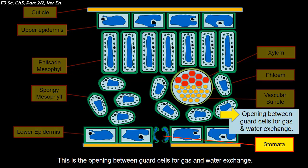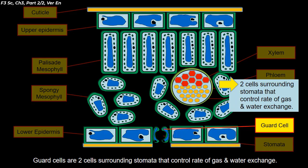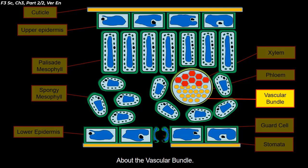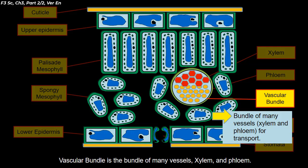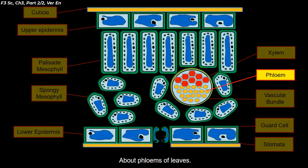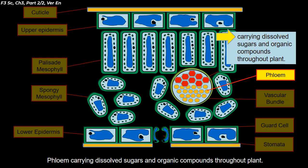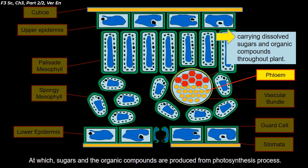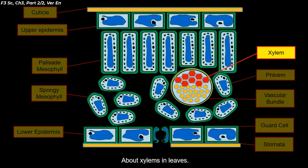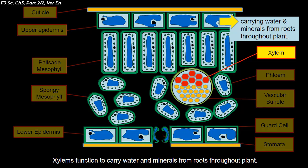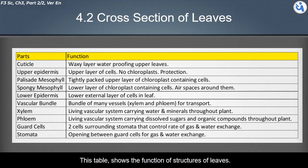The lower epidermis contains pores called stomata that allow carbon dioxide and oxygen to move in and out, and produces a waxy cuticle. Stomata are the openings between guard cells for gas and water exchange. Guard cells are two cells surrounding the stomata that control the rate of gas and water exchange. The vascular bundle contains xylem and phloem vessels for transportation. Phloem carries dissolved sugars and organic compounds produced from photosynthesis, while xylem carries water and minerals from roots throughout the plant.